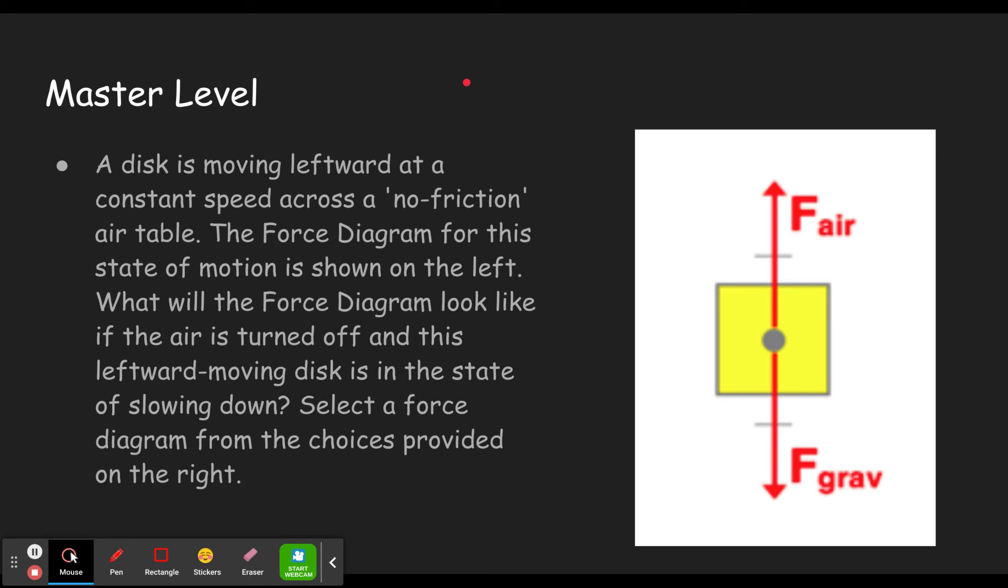And so here we see a disk is moving leftward. It's important to recognize that the velocity is to the left, across a no friction air table. You'll notice there are not any forces of friction in the horizontal direction here. A no friction air table, so it's like an air hockey table where the air is blowing the puck up. That's why we see air resistance pushing up. The force diagram for this state of motion is shown on the left. In this case, it's on the right.